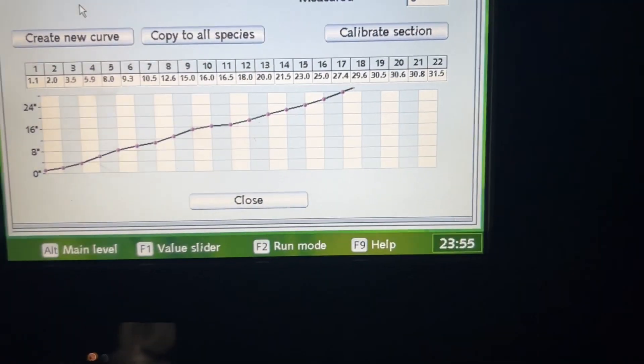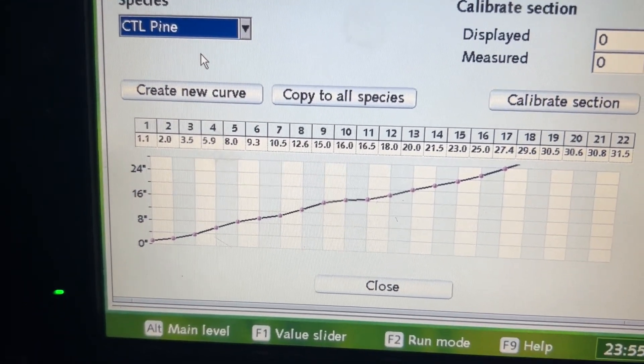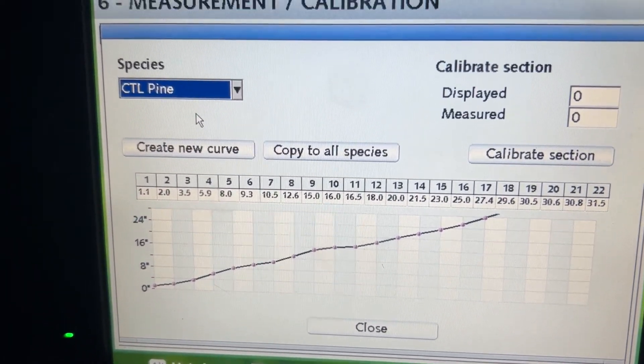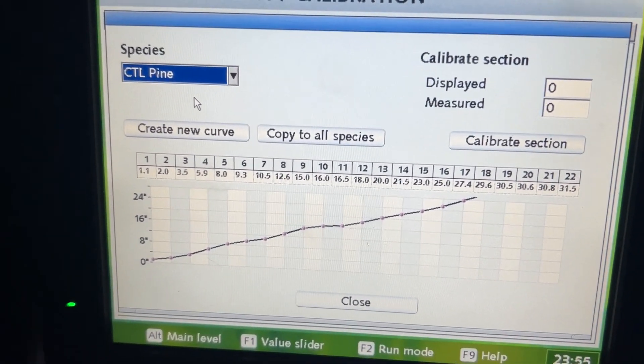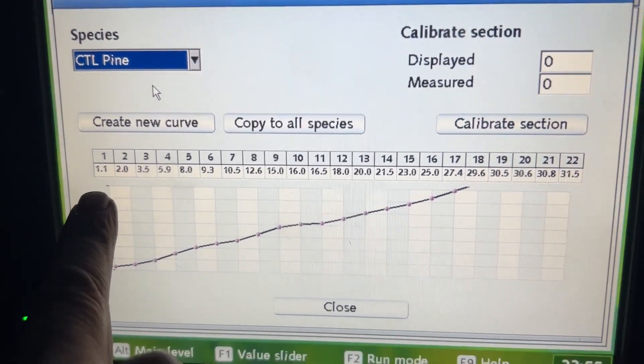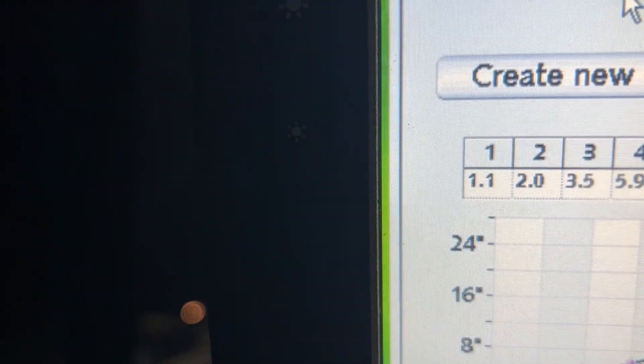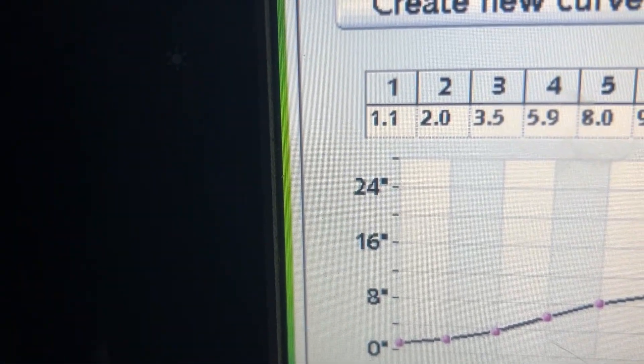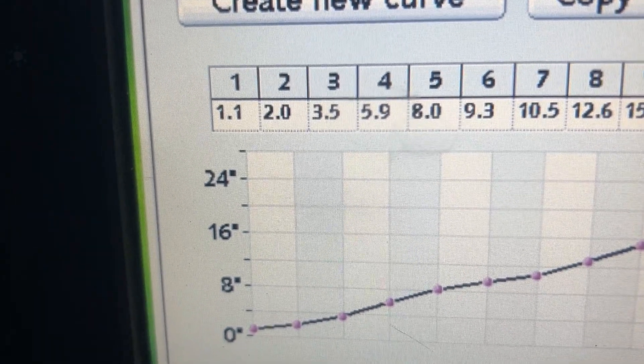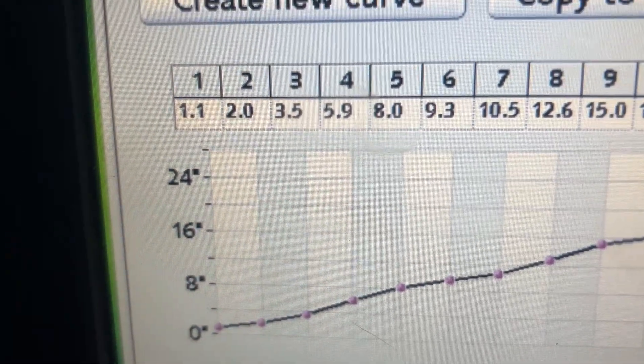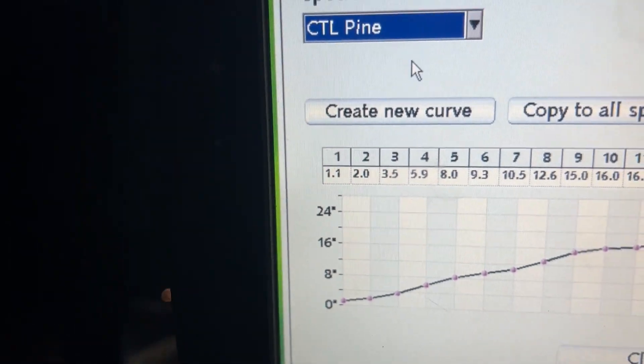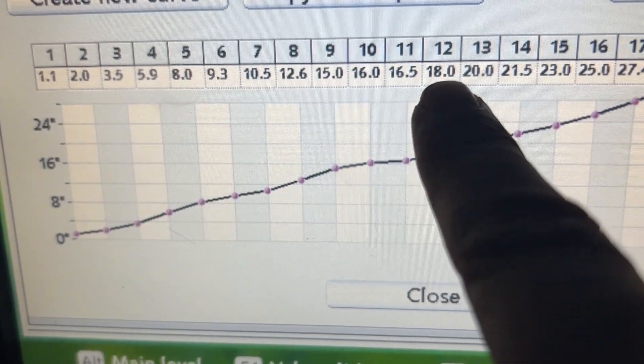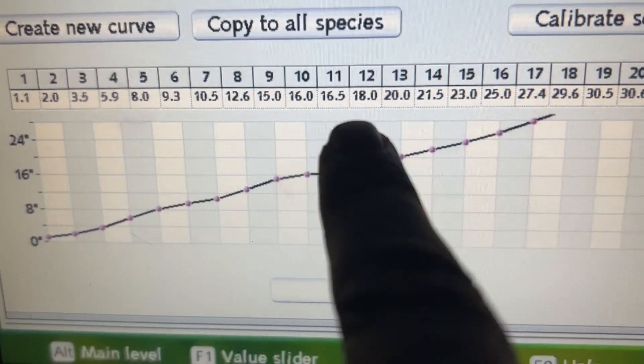What you are going to do is once your number is properly set, if your graph is crap and you need to rebuild it, a very easy way to do it is to start at the number 1 right there. Click on that box, put in 1.1, 2.2 for number 2, 3.3, 5 for number 4, and then keep going up by 2 inches until you get to around 16 and a half, then it is about an inch and a half.